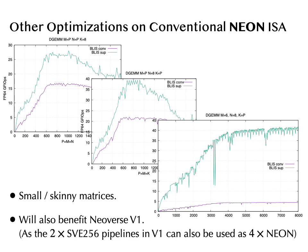I also have additional optimizations on the conventional Neon ISA, which will benefit Neoverse V1 because the two SVE-256 pipelines in Neoverse V1 can be used as four Neon pipelines — no loss of floating-point intensity, just smaller registers. These graphs are on the CPU part of the Apple M1 Max chip, which has four Neon pipelines, similar to ARM's Cortex-X. With small and skinny matrix kernels for very small k, very small n, and inner-product cases, we achieve very decent speedup in these scenarios.